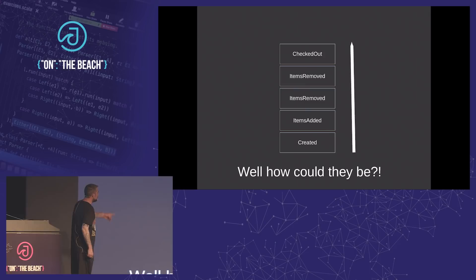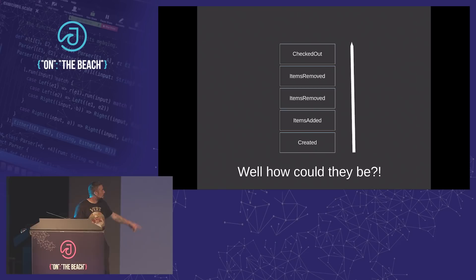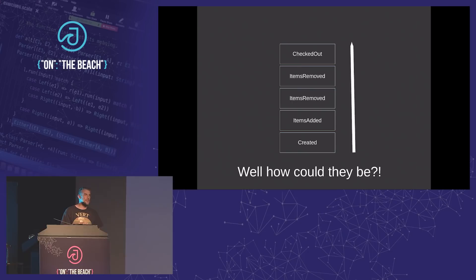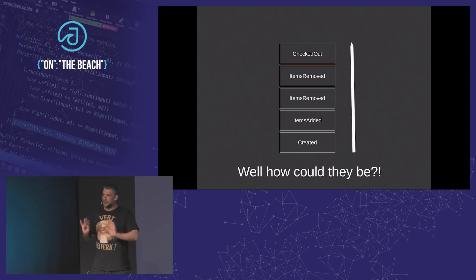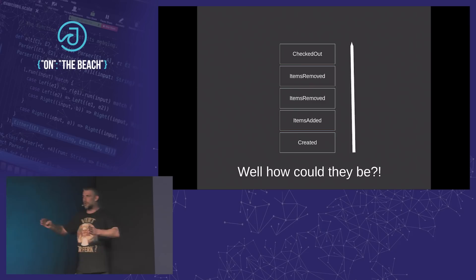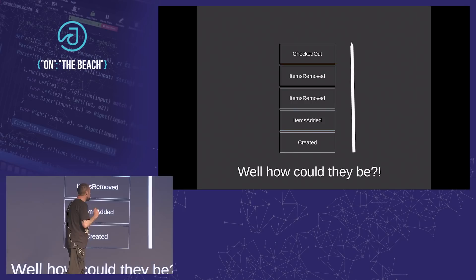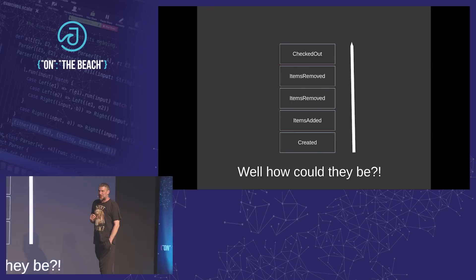If we look at this, how could this possibly show up out of order? Here we have a created, we have some items added, some items removed, some more items removed, and then we checked out. In these types of systems, we are dealing with what's known as linearization of our data. Linearization means we bring everything down to a single thread, and we have a guaranteed order of operations as we go to write them to the disk. The problem is that things do not always go into the log in the order they're supposed to go into the log.